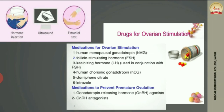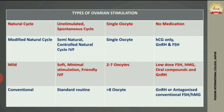Drugs given for ovarian stimulation include human menopausal gonadotropin (HMG), follicle stimulating hormone (FSH), luteinizing hormone (LH), human chorionic gonadotropin (HCG), clomiphene citrate, and letrozole. Additionally, drugs to prevent premature ovulation are given — such as gonadotropin releasing hormone (GnRH) agonist and FSH — so that the eggs are not released directly from the ovary before collection.